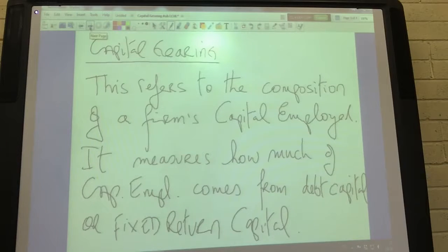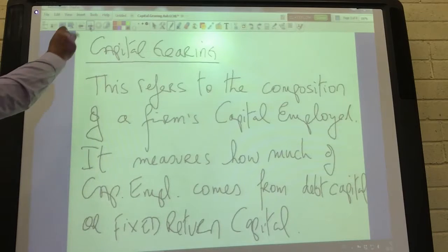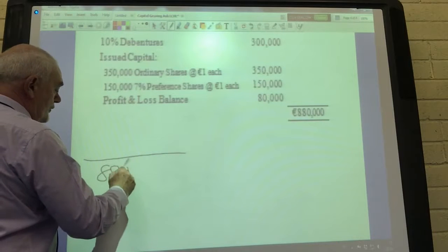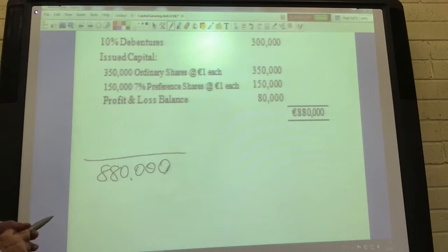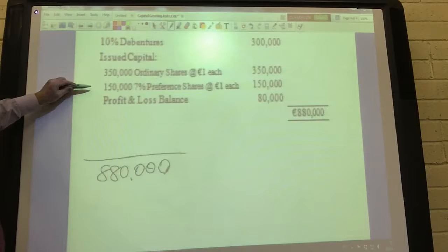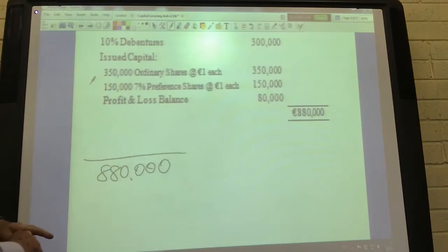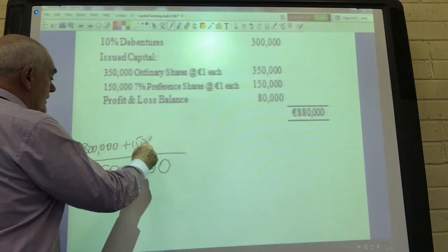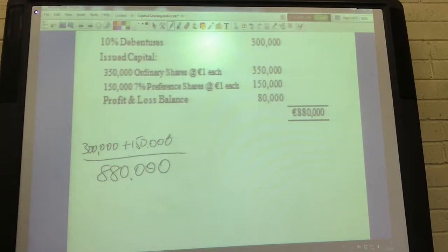Capital gearing refers to the composition of the firm's capital employed. It measures how much of capital employed comes from debt capital or fixed return capital. Let's have a closer look at Ash Limited capital employed. They've got 880,000 euro in capital employed of which the 300,000 coming from the debentures and the 150,000 euro coming from preference shares would be classed as fixed return capital. Strictly speaking, the 150,000 coming from the preference shareholders wouldn't really be called debt capital.